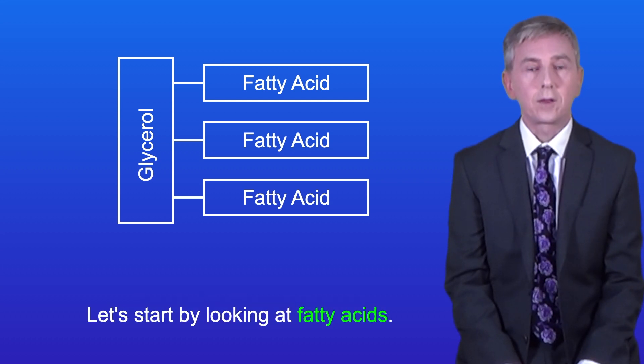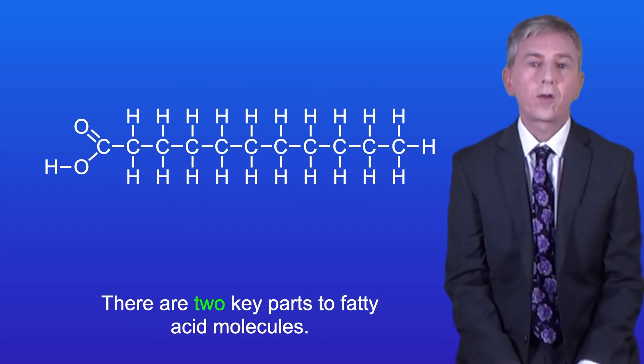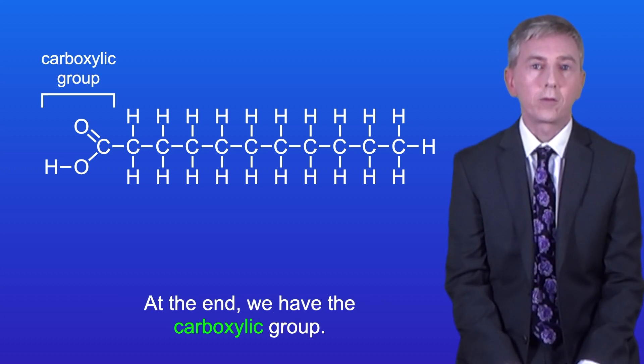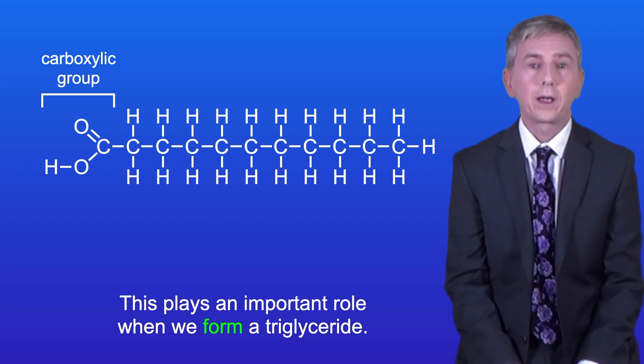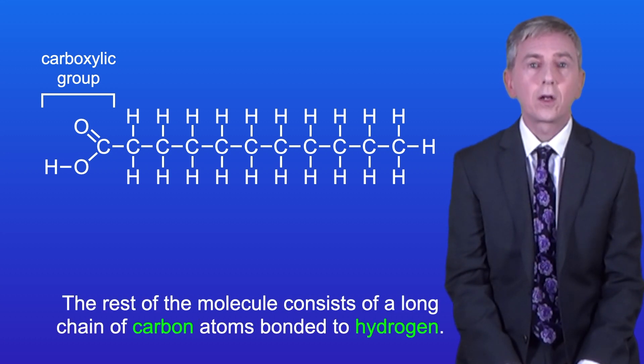Let's start by looking at fatty acids. I'm showing you the structure of a fatty acid molecule here. There are two key parts to fatty acid molecules. At the end we have the carboxylate group, and this plays an important role when we form a triglyceride. We'll be looking at that in more detail later in the video. The rest of the molecule consists of a long chain of carbon atoms bonded to hydrogen.